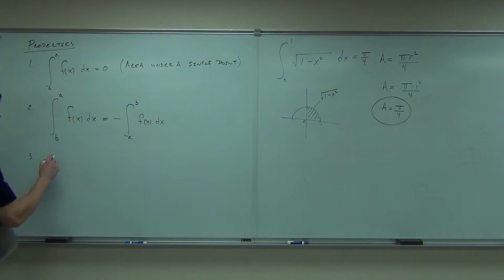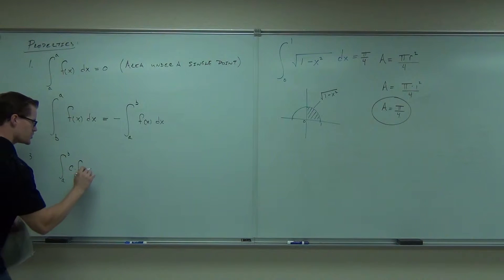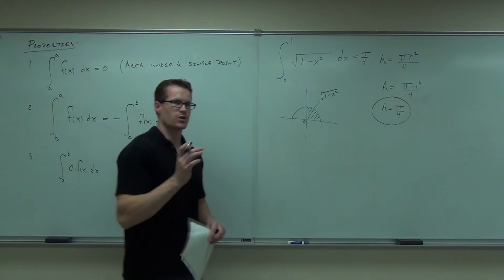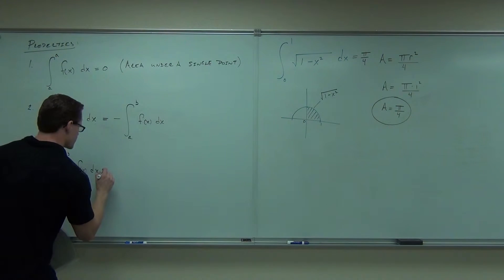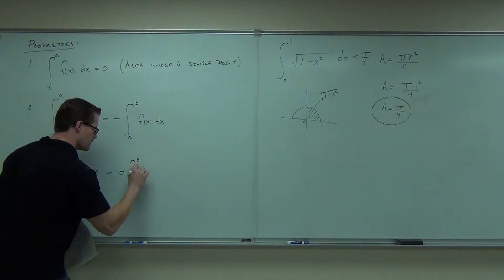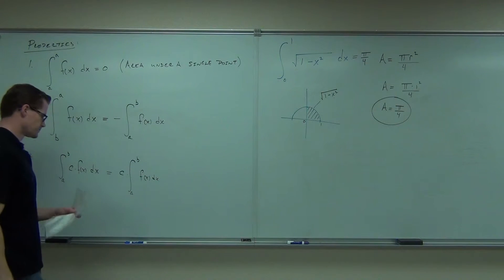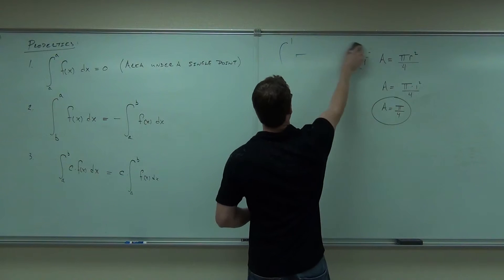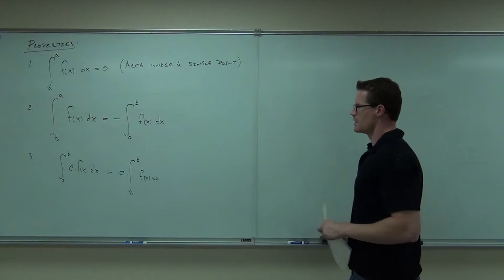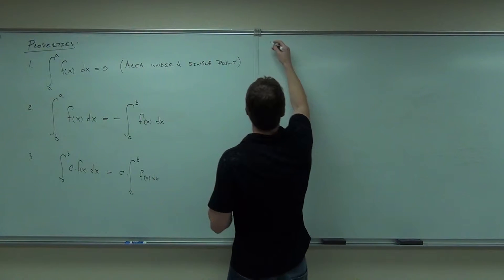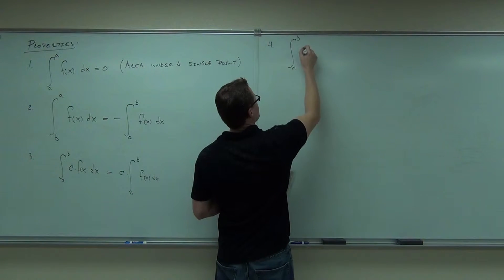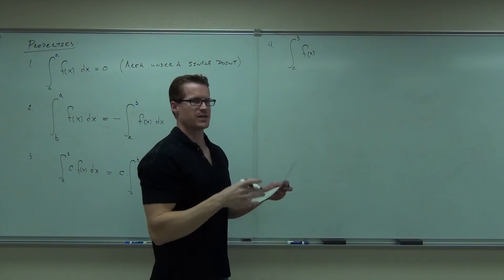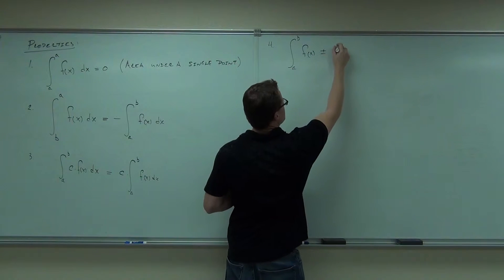Okay, third property. Just like before, even with definite integrals, you can always pull a constant outside of your integral. So, if we have c times f of x, where c is a constant, this is the same thing as c times that integral.